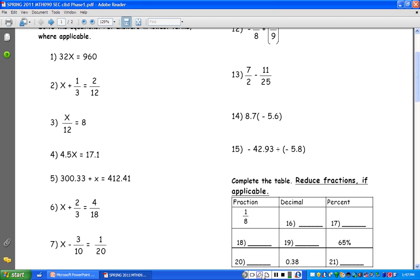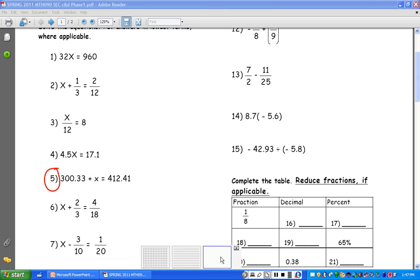Let's try one more. Let's try number 5 here. 300.33 plus x equals 412.41. Here it looks a little backwards, right? But we still have a positive 300.33. If no sign is in front of the number, it's considered to be positive. So how do we get rid of something that's positive? We will subtract it. We're going to subtract 300.33 from both sides because we want to get x by itself.